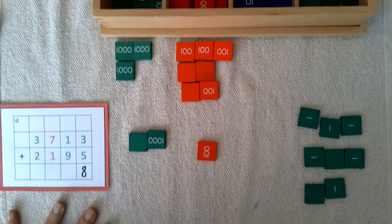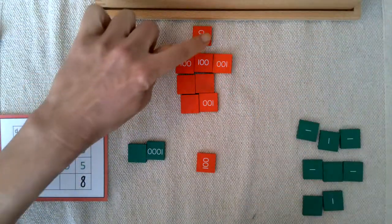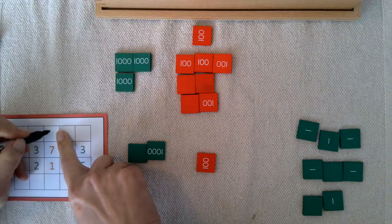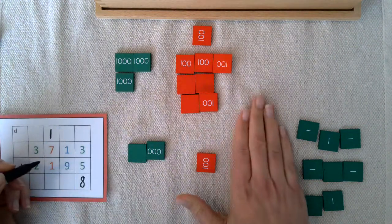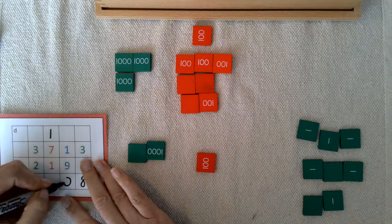And I like to have the exchange kept separate. So at first we put it up here and then we mark that exchange, record it, and then we see that there's zero tens left. So we put a zero in the tens place.